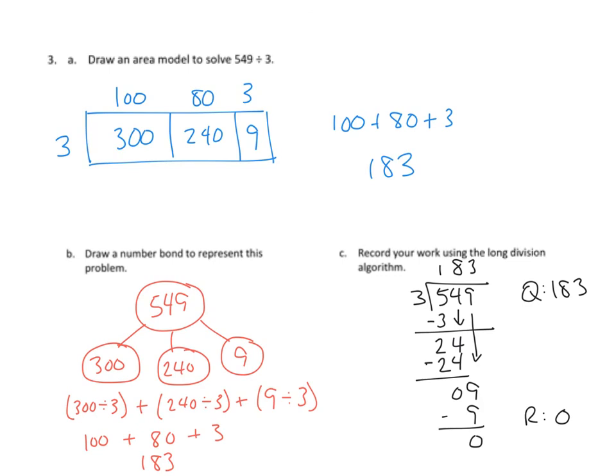And then we've used our distributed property here to solve this problem. We've solved 300 divided by three, 240 divided by three, and nine divided by three. Got the same answer, 183. And then finally, we've used the long division algorithm that we've come to know and love.